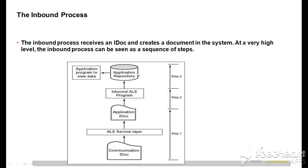The data from the application IDoc is taken into an internal table, which is then passed to the application repository via a BDC or BAPI program. This updates the data from the internal table into the database tables. The inbound process has three steps: step one is data transformation from communication IDoc to application IDoc, step two is execution of the inbound process, and step three is loading the data into the application repository.